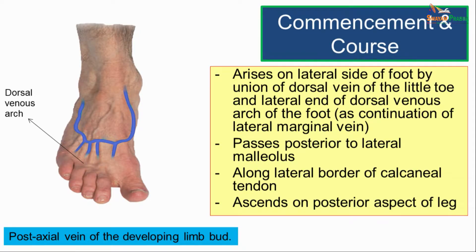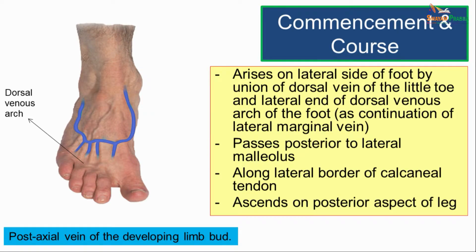The small saphenous vein is the post-axial vein of the developing limb bud. It arises on the lateral side of the foot by union of the dorsal vein of the little toe and the lateral end of the dorsal venous arch of the foot, as a continuation of the lateral marginal vein. It passes posterior to the lateral malleolus, runs along the lateral border of the tendo calcaneus (Achilles tendon), and ascends on the posterior aspect of the leg.